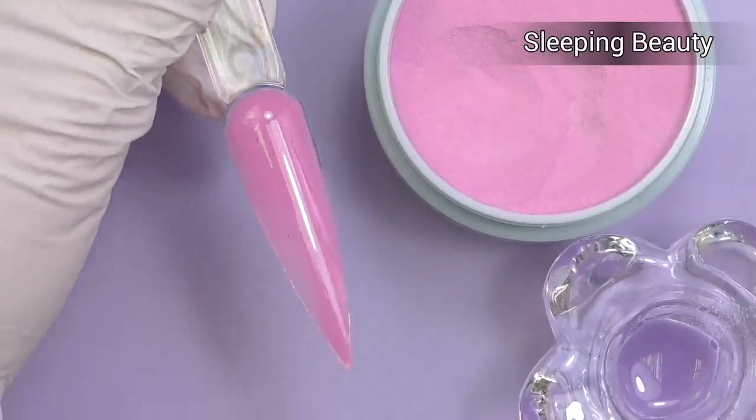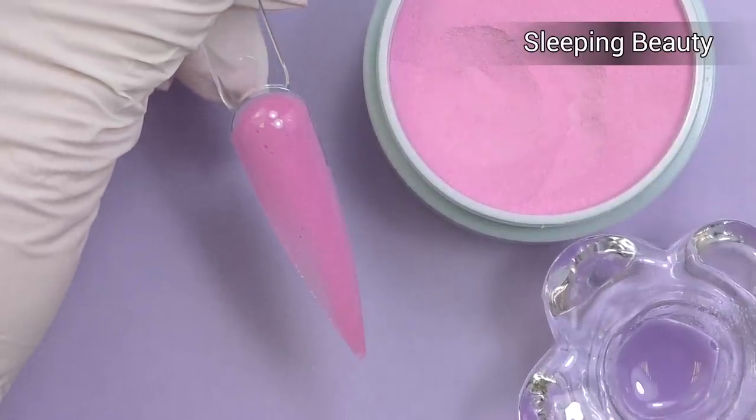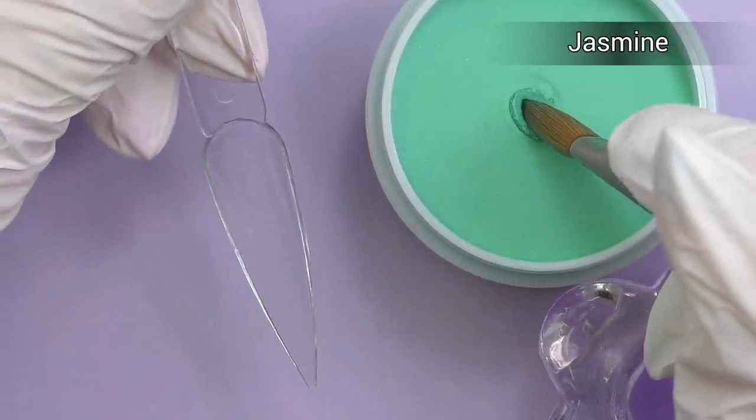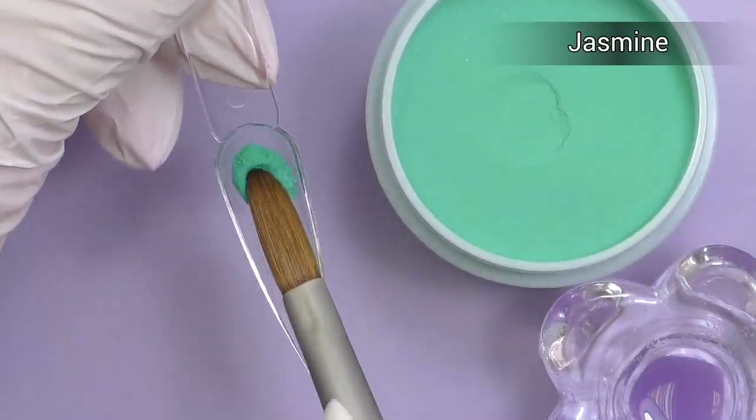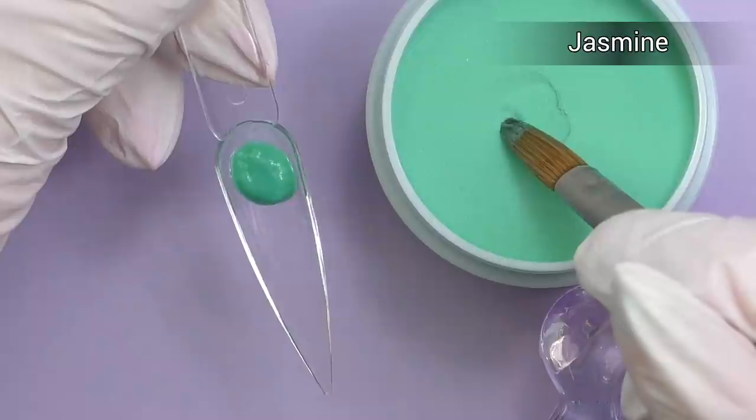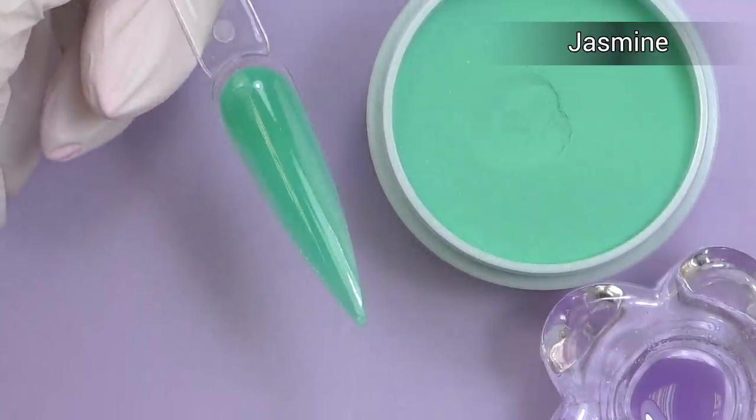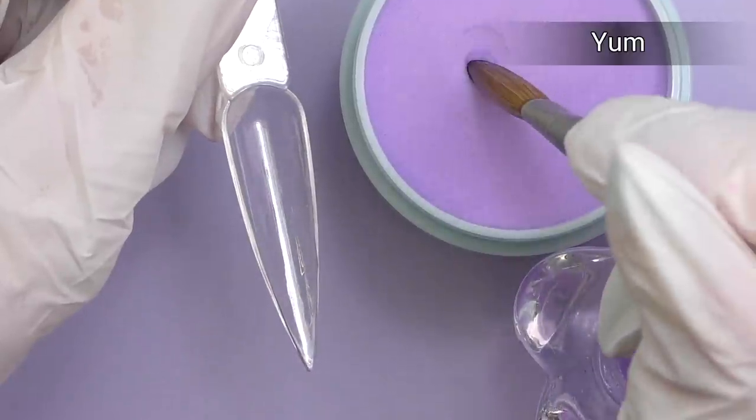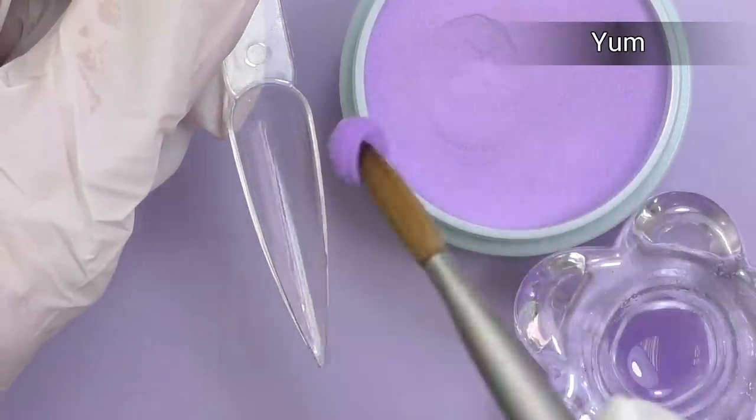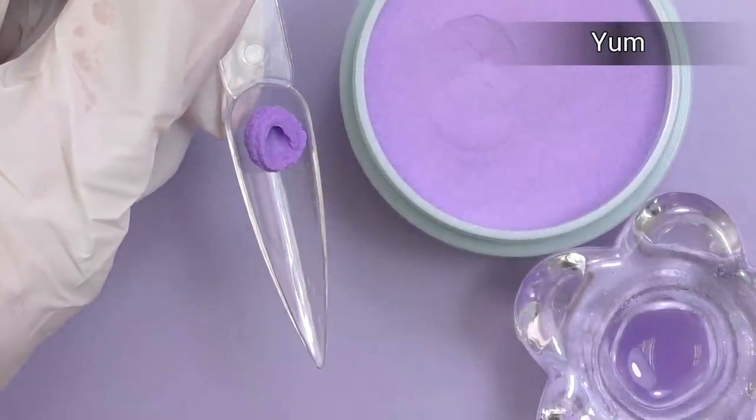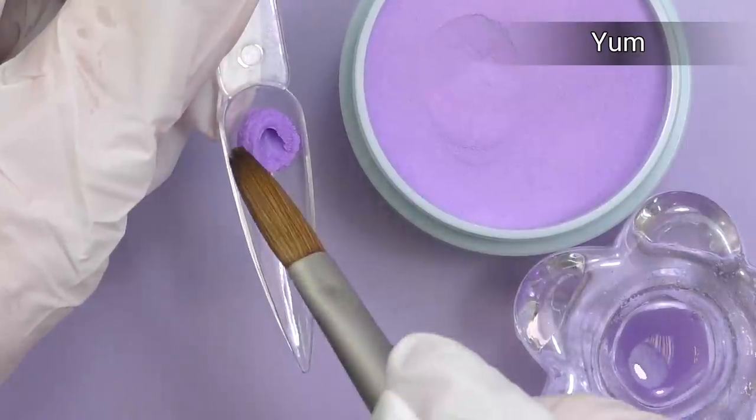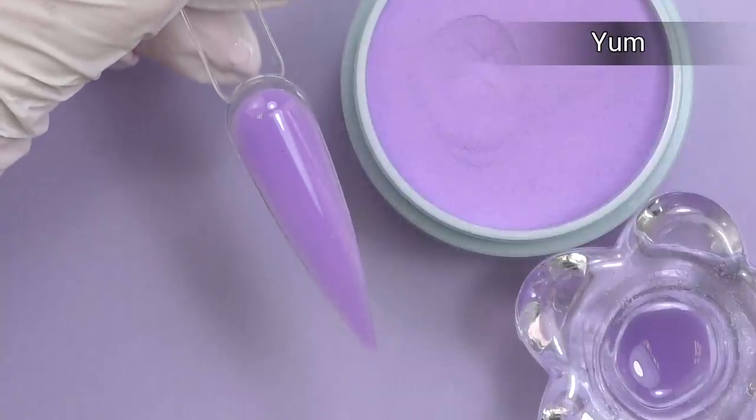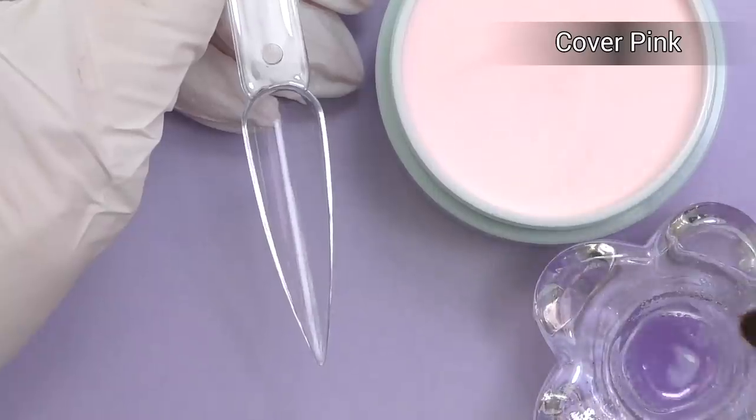The color I just showed you is called Sleeping Beauty. I decided to pick beautiful pastel shades. So another one is called Jasmine. It's like intense, I would say dark mint color. When I was placing the order it was still summer, so obviously I was in a very sunny and summer mood. Next color is called Yum. It's beautiful purple shade. And this is the last color powder that I ordered. I also have clear and cover pink.